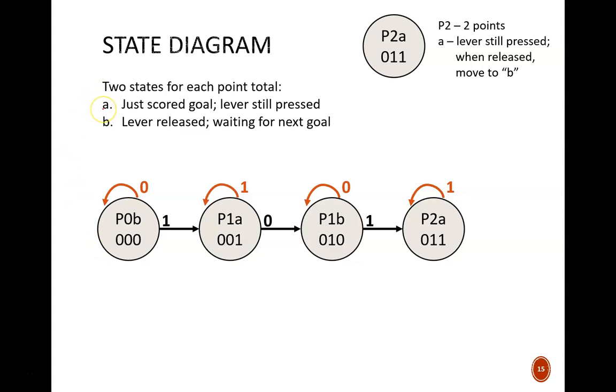The first state is just after a goal has been scored, while the lever is still pressed. The second state is after the lever is released, and the circuit is waiting for the next goal.